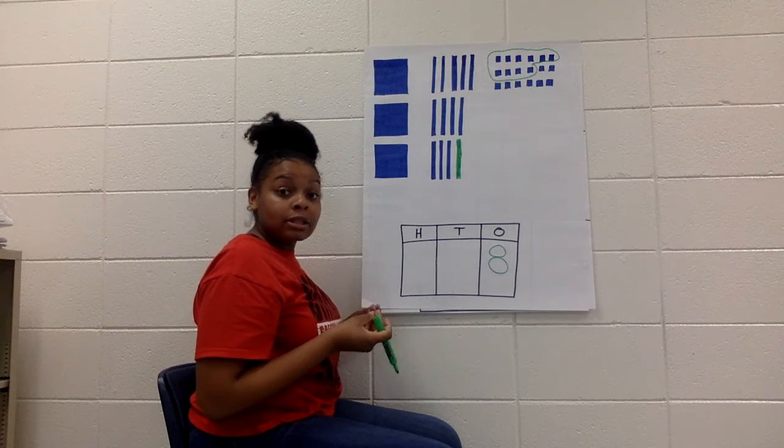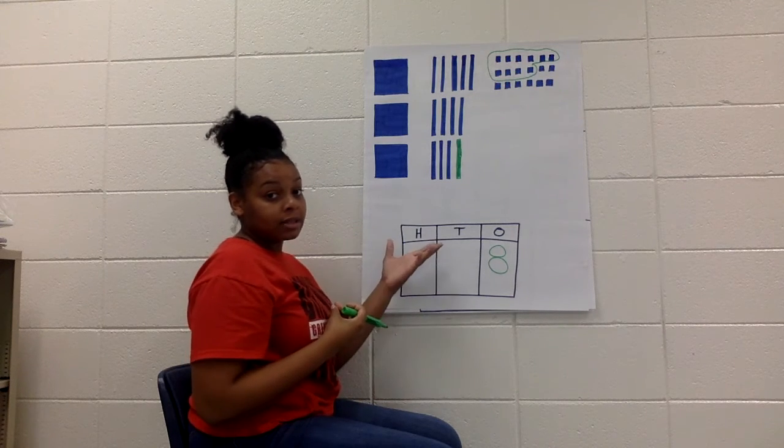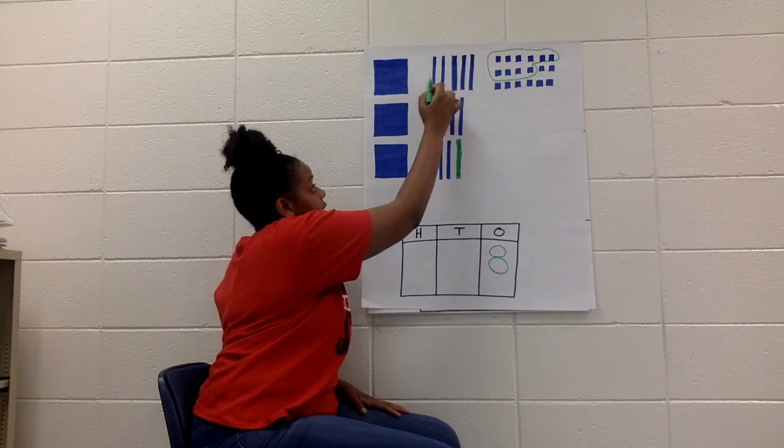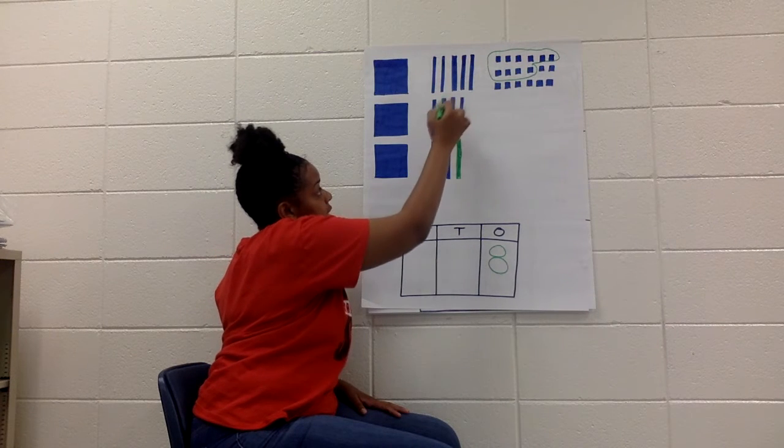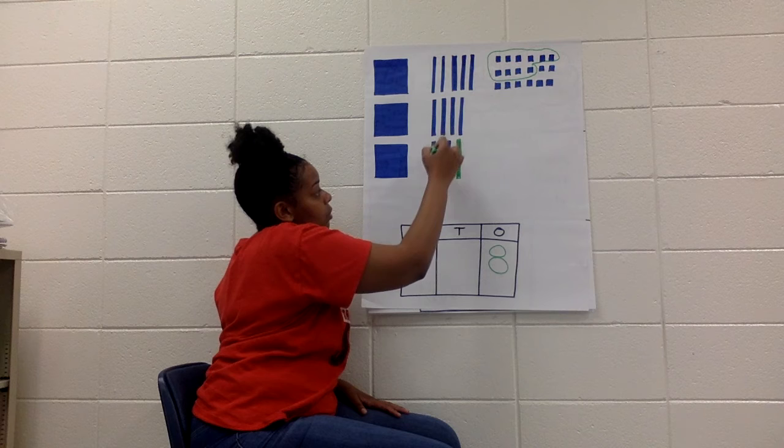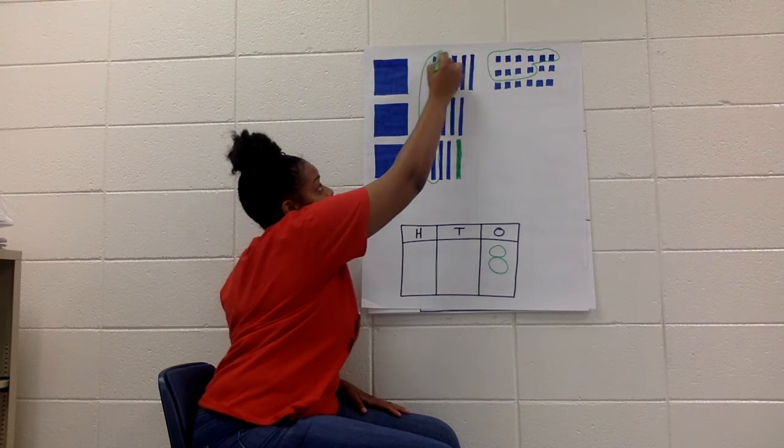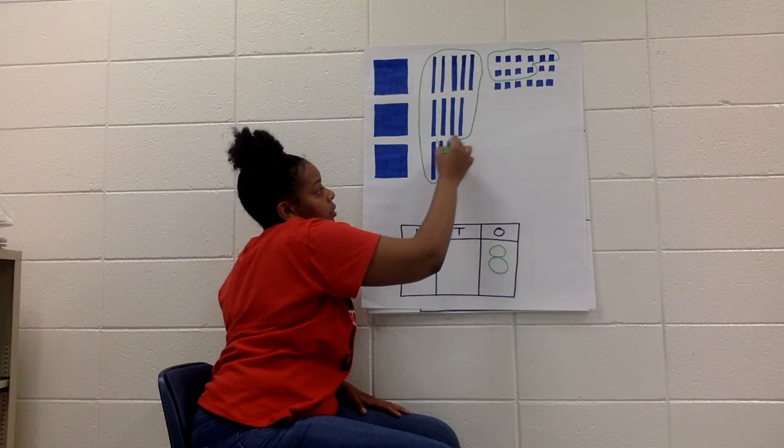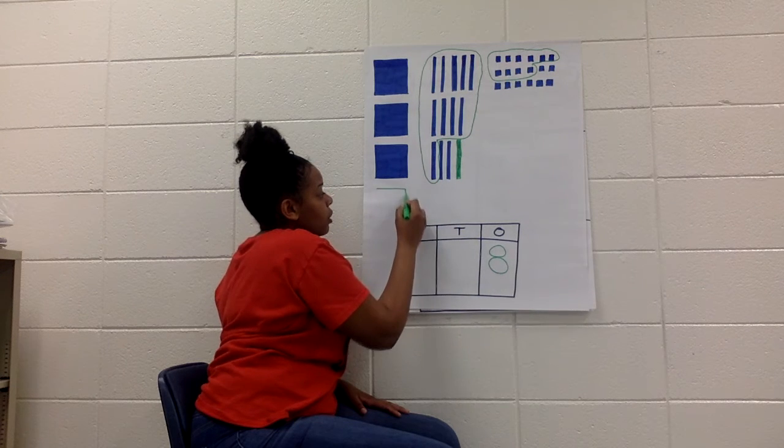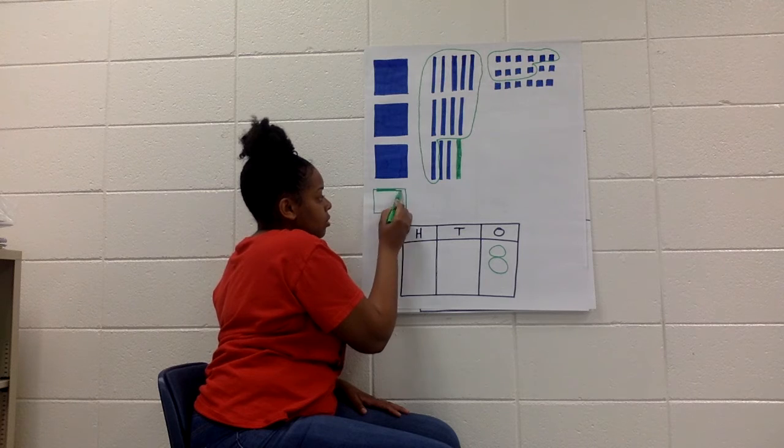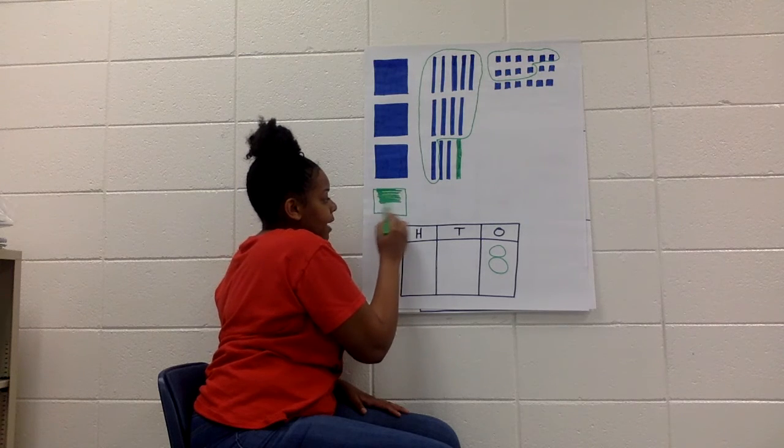Just for the sake of counting by tens, I'm going to count my tens by tens. 10, 20, 30, 40, 50, 60, 70, 80, 90, 100. Stop. Regroup. And add a 100 square. Or a flat.